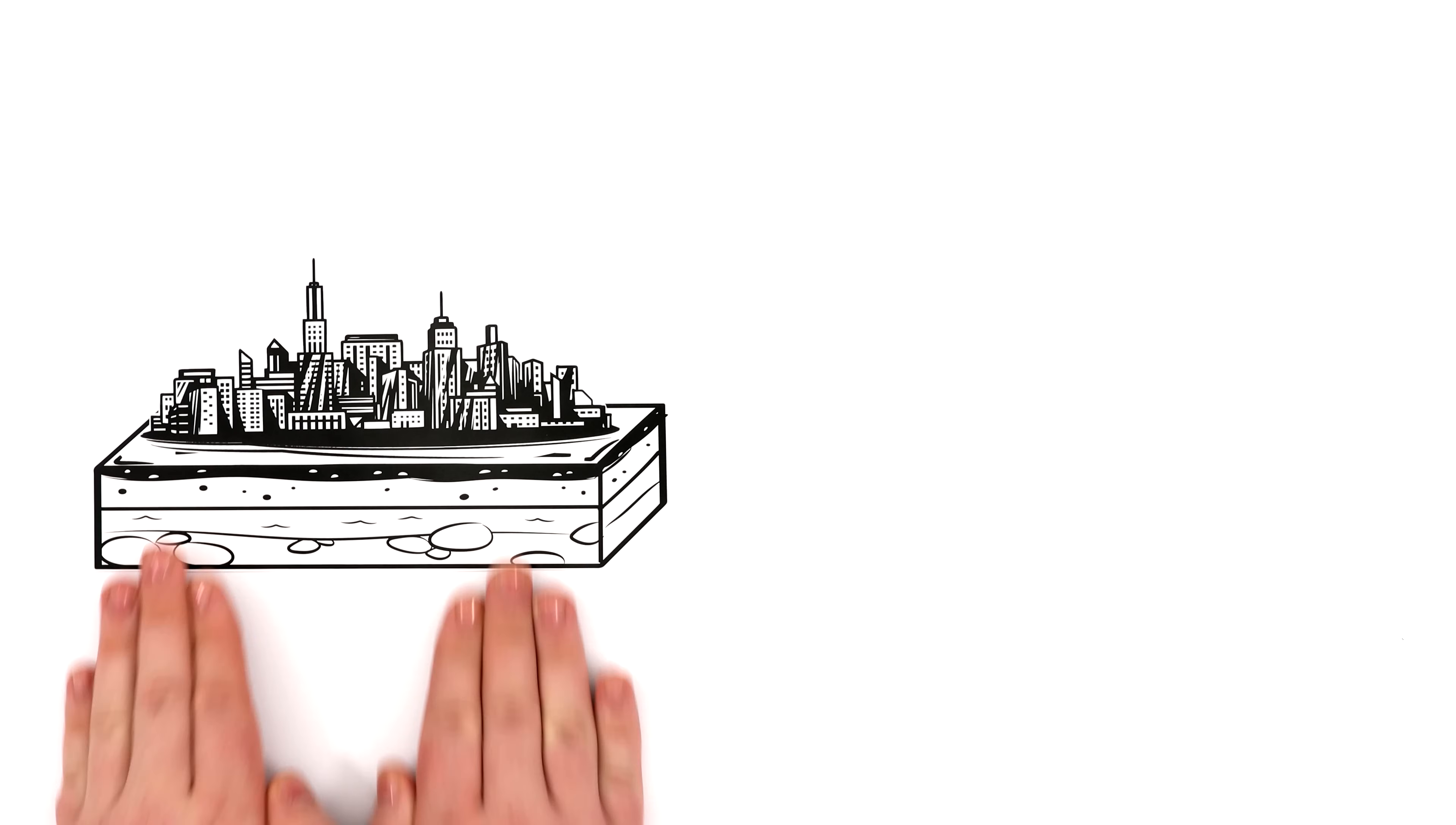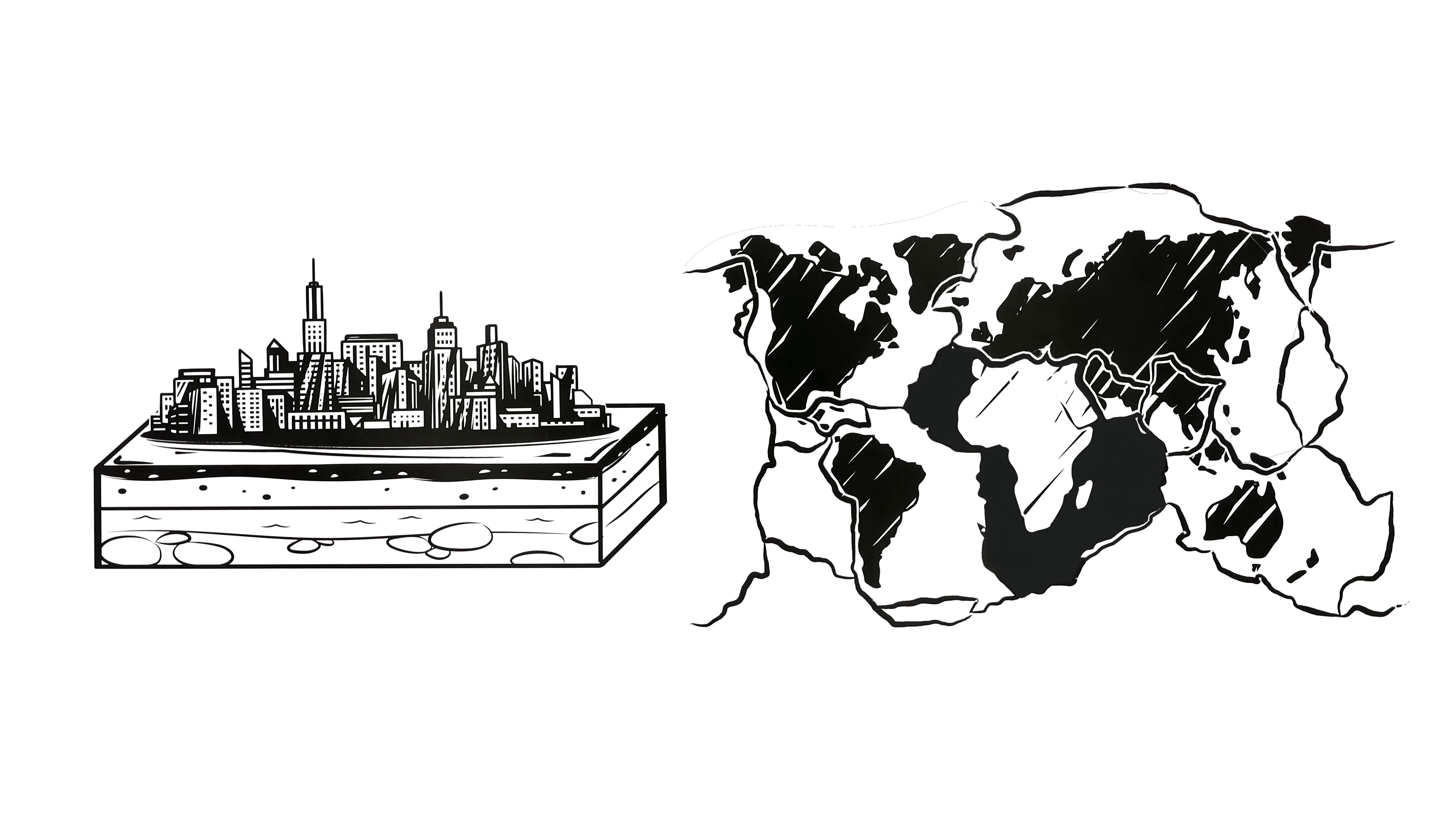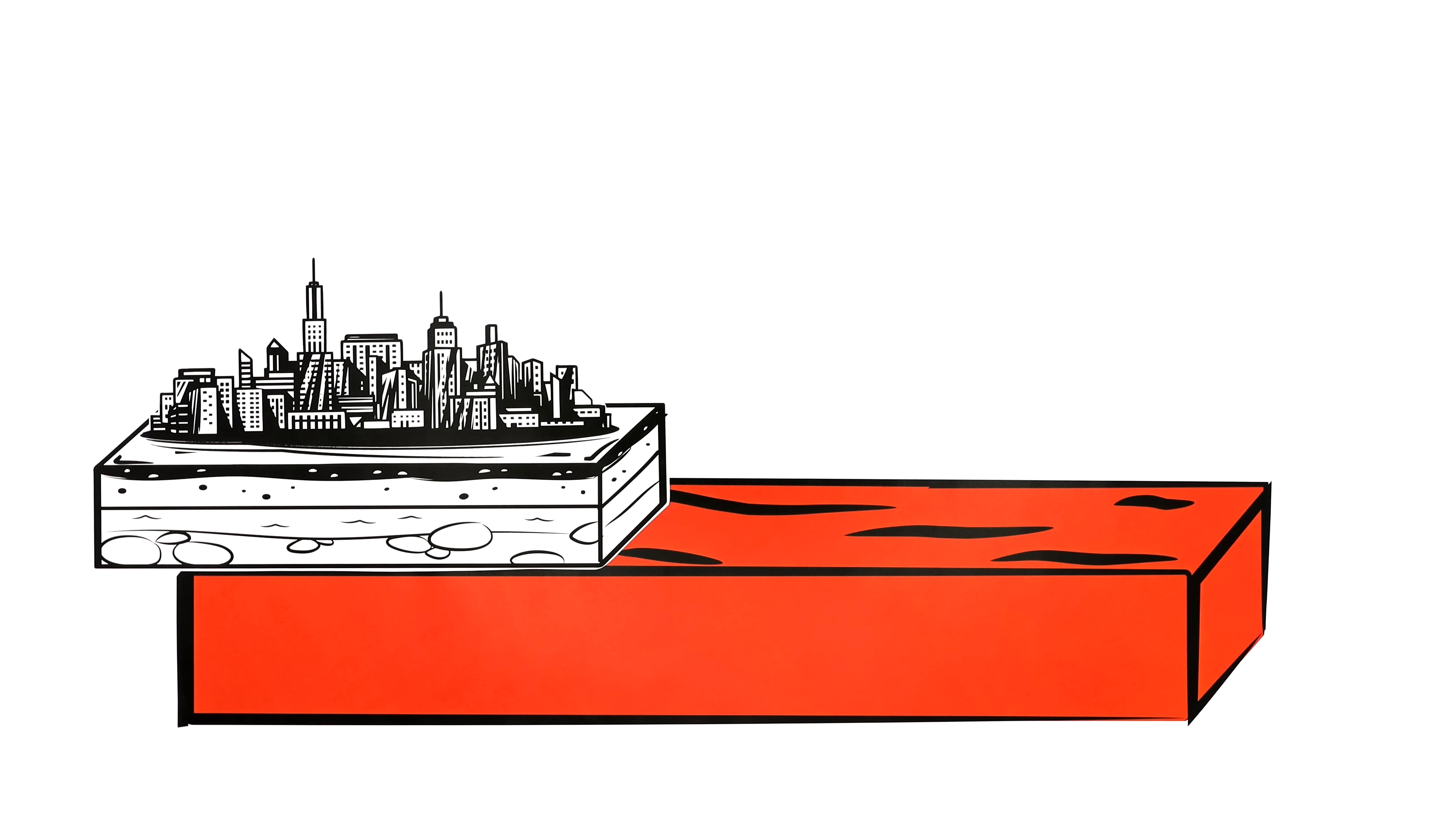First, we should mention that the Earth's crust, the top layer of the Earth, is made up of seven large and many small tectonic plates. Under the Earth's crust, there's the liquid mantle. Due to convection currents in the Earth's mantle, the plates begin to move and float like sheets of ice on top of the Earth.